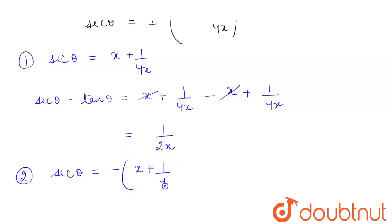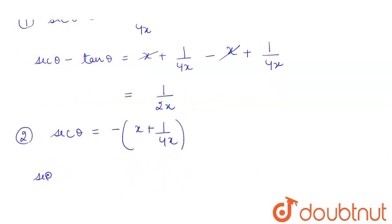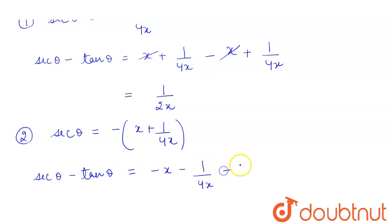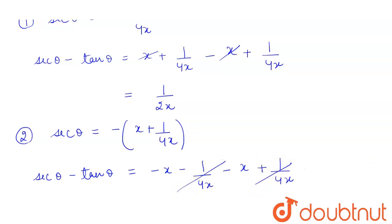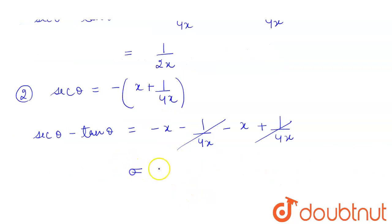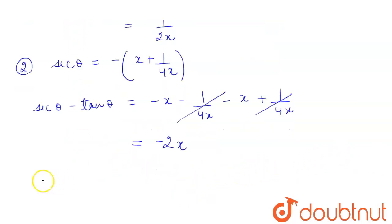So sec θ minus tan θ will be equal to minus (x plus 1 upon 4x) minus (x minus 1 upon 4x). We see that the 1 upon 4x terms cancel, and this will be equal to minus 2x.